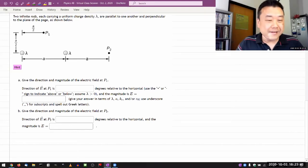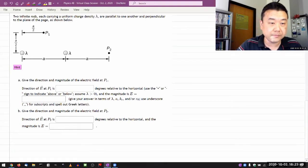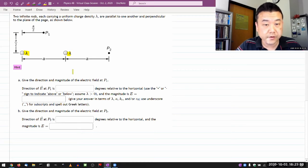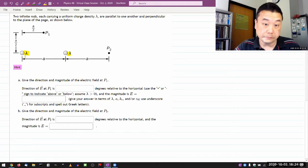Let me get started. So it says two infinite rods, each carrying a uniform charge density lambda. Let me just highlight them as I go. They are parallel to one another. As I'm looking at this picture, I have to have a correct image in mind. Even though it looks like a point charge, what it is is a line that's pointing into the page, perpendicular to the plane of the page.